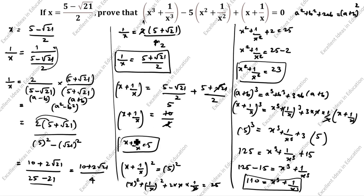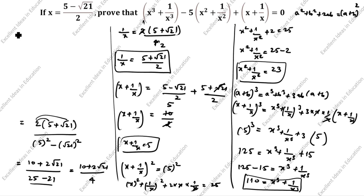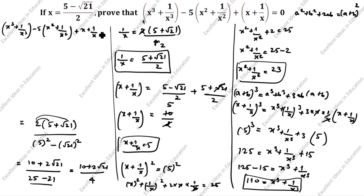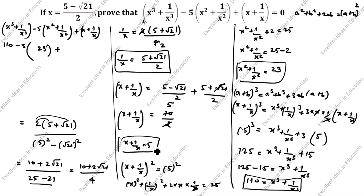Now we have all values: x³ + 1/x³ equals 110, x² + 1/x² equals 23, and x + 1/x equals 5. We substitute into the expression: (x³ + 1/x³) minus 5(x² + 1/x²) plus (x + 1/x) equals 110 minus 5 times 23 plus 5, which equals 110 minus 115 plus 5 equals 0. Hence LHS equals RHS, proved.